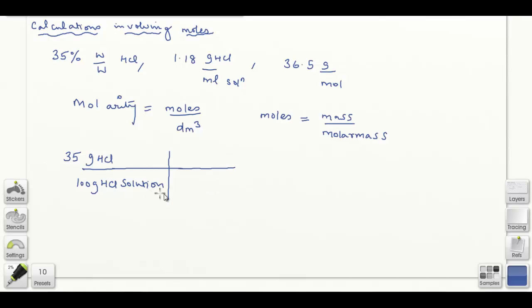What I need in the denominator is volume. To get rid of the mass unit in the denominator, I can use the density. So I can write that 1.18 grams of hydrochloric acid solution equals one milliliter of solution.